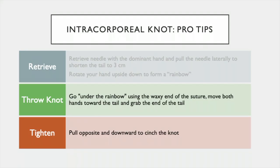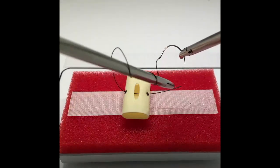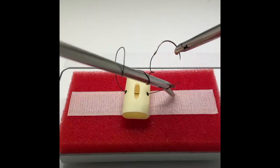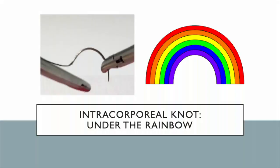The next tips are for throwing and tightening the knot. To throw your knot, move your needle driver under the rainbow using the waxy end of the suture. Two throws are performed to create a surgeon's knot. Grab the end of the tail and pull opposite and downward to cinch the knot. Going under the rainbow right at the junction of the needle in the suture uses the stiffest part of the suture and simplifies intracorporeal knot tying.